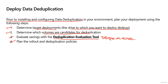Then we just plan the rollout of deduplication and plan the policies. We'll see the policies in the interface — they're going to contain things like deduplicate files older than a certain number of days, or if you want an exclusion to say don't deduplicate a certain file extension. We'll see those policies in the interface; they're really pretty simplistic.